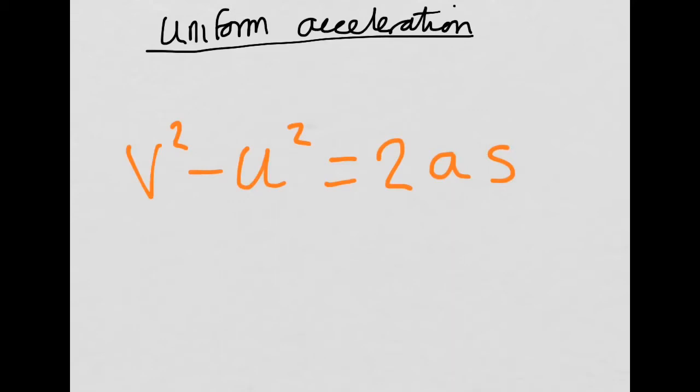So it starts at some velocity and then it goes up to another velocity by accelerating to it. Let's have a look at the terms in this equation. We've got V. So V squared minus U squared is 2AS. So V in this equation is our final velocity.